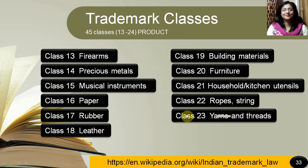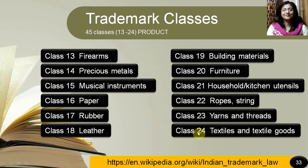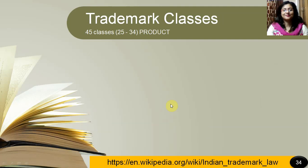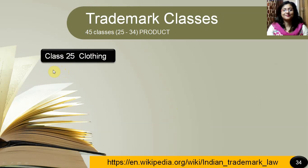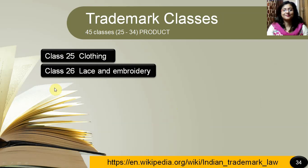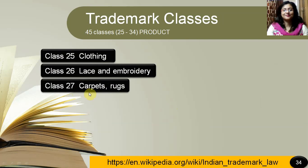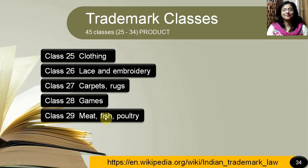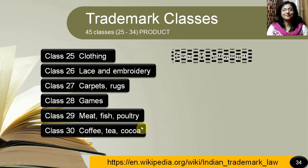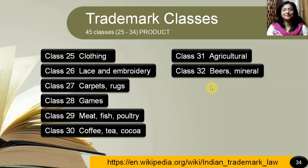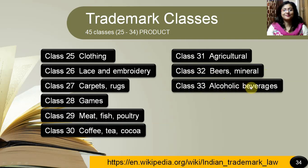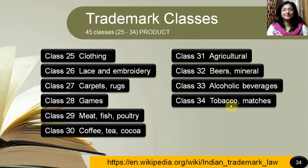Class 23 for yarns and threads. Class 24 for textiles and textile goods. Class 25 for clothing. Class 26 for lace and embroidery. Class 27 for carpets and rugs. Class 28 for games. Class 29 for meat, fish or poultry. Class 30 for coffee, tea, cocoa. Class 31 for agricultural. Class 32 for beers and mineral. Class 33 for alcoholic beverages other than beers. Class 34 for tobacco and matches.